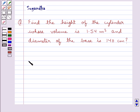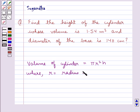Let's recall the volume of cylinder which is equal to pi r square h, where r is the radius of cylinder and h is the height of cylinder.